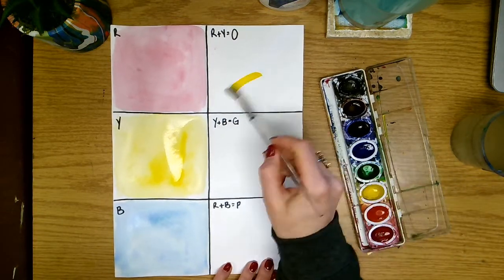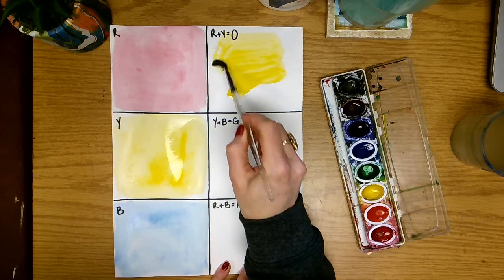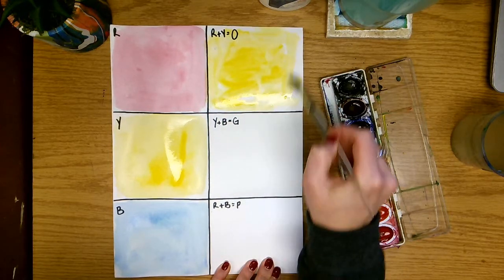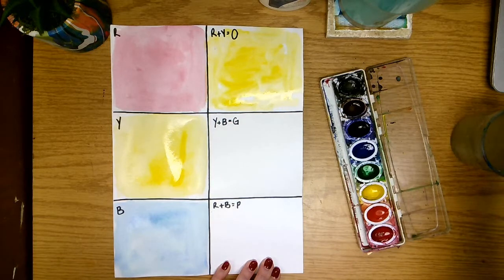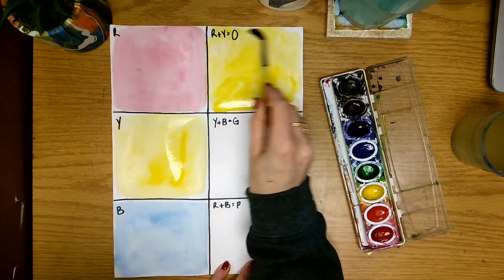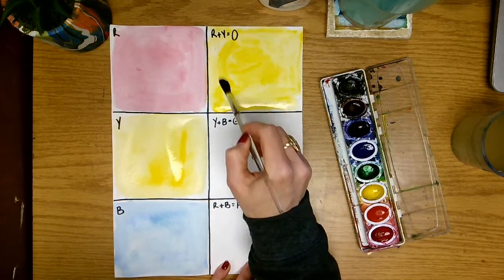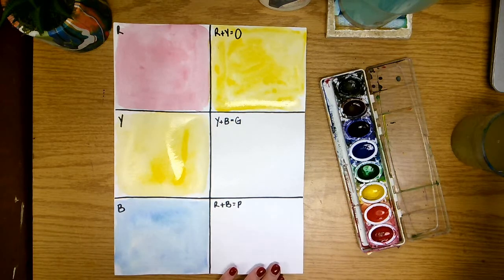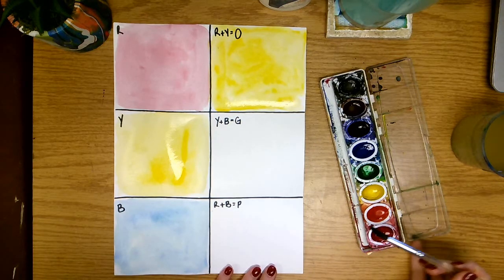So we're going to take our yellow paint, we're going to paint in this square first with just yellow. And notice how I'm moving pretty quickly it does not need to be perfectly painted in. We're just trying to get our color down and we want it to be wet. We don't want it to have a chance to dry before we add our next color which is going to be red.